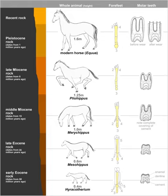Phenacodontidae is the most recent family in the order Condylarthra believed to be ancestral to the odd-toed ungulates. It contains the genera Almogaver, Copecion, Ectocion, Eodesmatodon, Meniscotherium, Ordithspidotherium, Phenacodus, and Pleurispidotherium. The family lived from the early Paleocene to the middle Eocene in Europe and were about the size of a sheep, with tails making slightly less than half of the length of their bodies and, unlike their ancestors, good running skills for eluding predators.